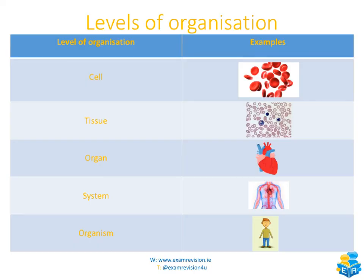All of that can be summarized in this table. Our basic unit of organization is the cell — an example would be our red blood cells. Once we move from a cell, we move up to a tissue, which is a group of cells working together to perform the same job. An example of a tissue would be blood tissue, because it's composed of numerous cells — red blood cells, white blood cells, platelets, and plasma.